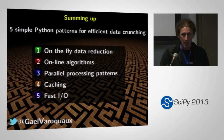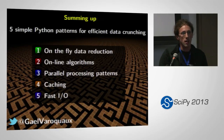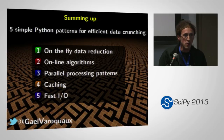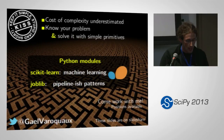To wrap up, what I've learned in terms of processing biggish data: I need to worry about data reduction depending on my problem. I really need to code online algorithms — I don't want each loop of my algorithm to process all my data. I want my algorithm to converge on expectation, not exactly. I need simple parallel processing patterns, I do need caching, and I will need some fast I/O. One last message: in my experience, if you want to get a result quickly, keep everything as simple as you can. People really underestimate the cost of complexity.